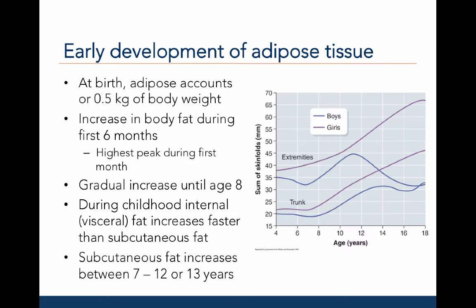At birth, adipose accounts for only about half a kilogram of body weight. There is a large increase in body fat during the first six months of postnatal development, with a peak in adipose development during the first month. For both males and females, there is a gradual increase in adipose tissue until age eight. During childhood, the amount of internal or visceral fat increases faster than the amount of subcutaneous fat, or the fat just below the skin.